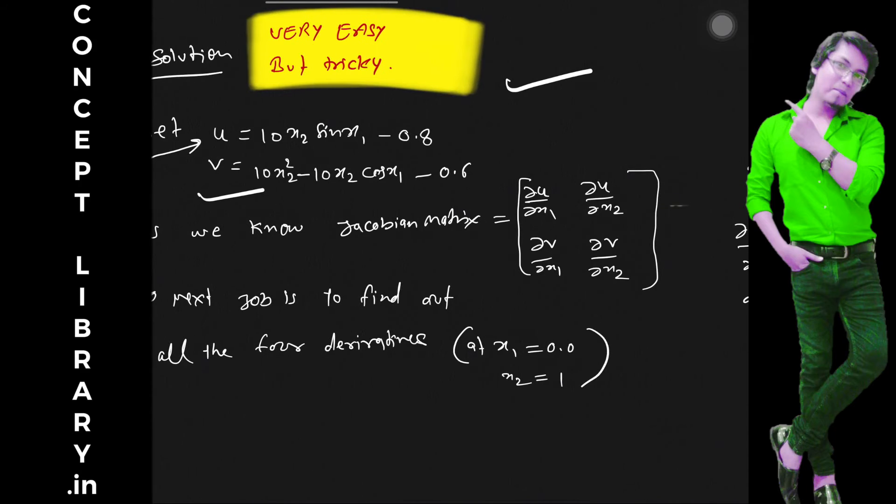And in the same way, the second equation, this much part we have considered as v. As we know the Jacobian matrix is in form of ∂u/∂x1, ∂u/∂x2, ∂v/∂x1, ∂v/∂x2. They all are partial derivatives.